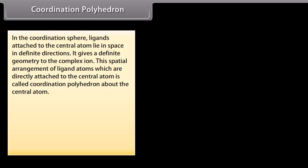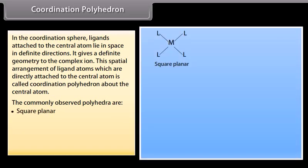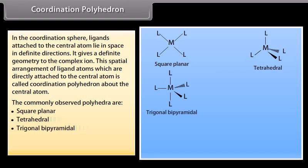Coordination Polyhedron. In the coordination sphere, ligands attached to the central atom lie in space in definite directions, giving a definite geometry to the complex ion. This spatial arrangement of ligand atoms directly attached to the central atom is called the coordination polyhedron. The commonly observed polyhedra are: square planar, tetrahedral, trigonal bipyramidal, square pyramidal, and octahedral. For example, square planar is observed in [PtCl4]2−, tetrahedral in Ni(CO)4, and octahedral in [Co(NH3)6]3+.